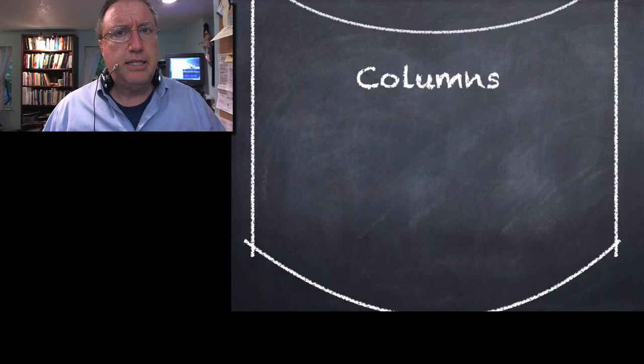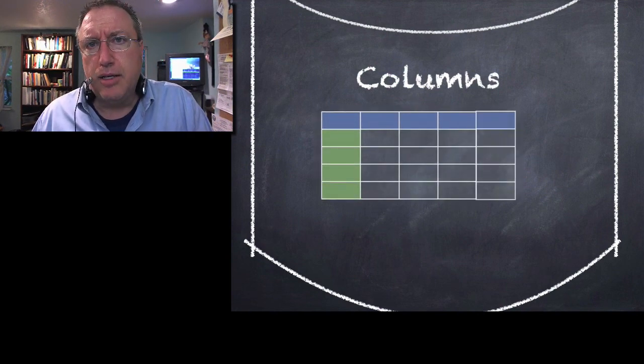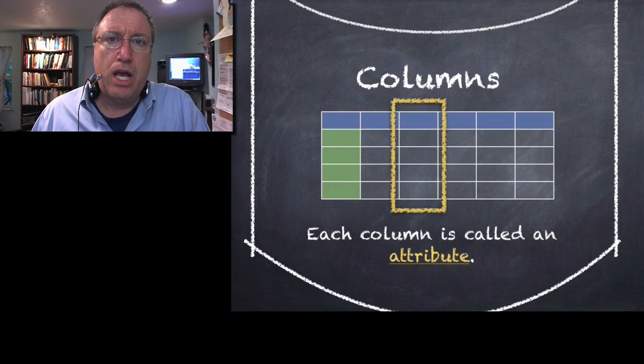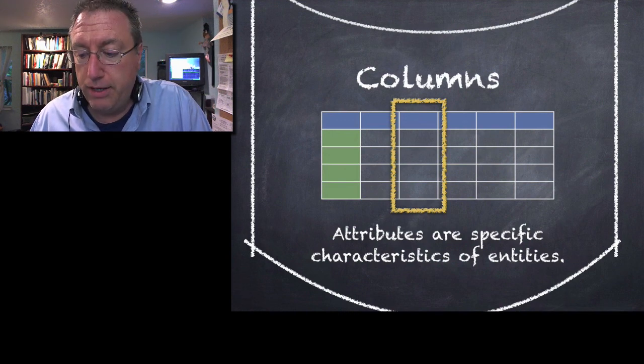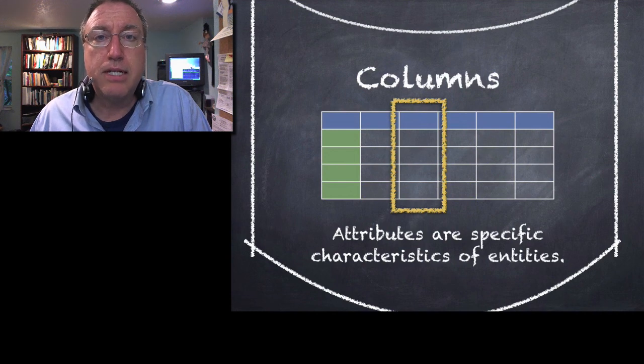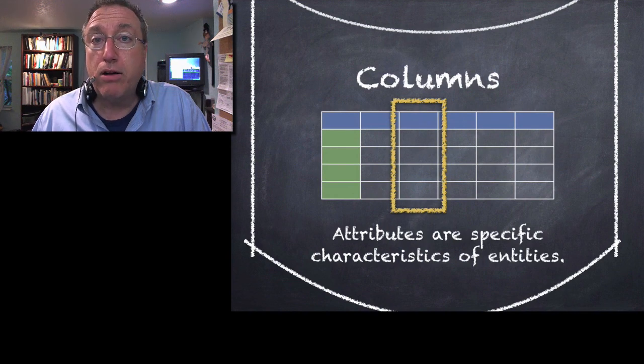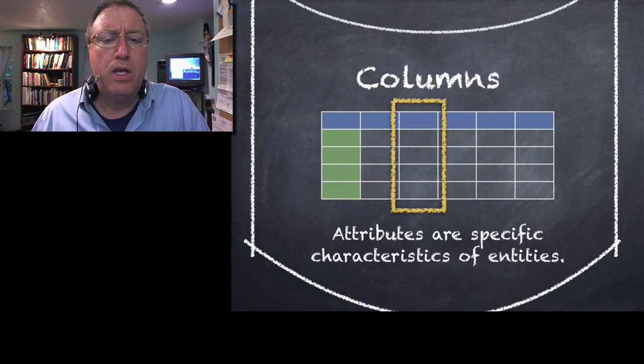Now, tables have columns as well. Each column represents an attribute. An attribute is just a particular characteristic of an entity. For example, if your entity represents a person, one attribute might be their eye color, or their hair color, or their height, or their weight. Attributes are characteristics of entities.